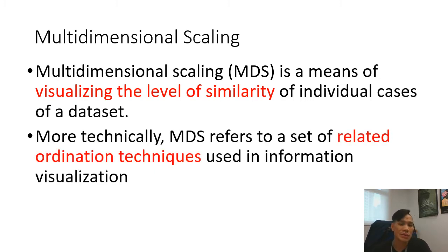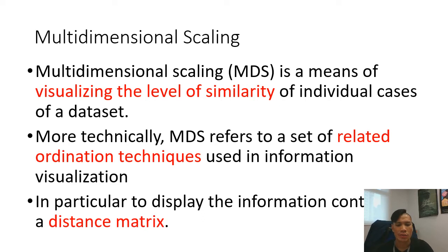Technically, MDS refers to a set of ordination techniques - that means finding unique distances used in information visualization. It's visualizing how far or how close a particular characteristic is towards a particular group. In particular, we want to display the information using a continuous distance matrix.